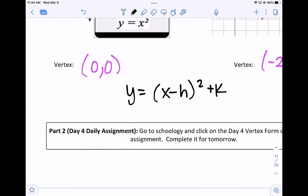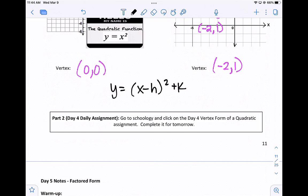So in class, there'll be a link to the day 4 vertex form of a quadratic, which links you to Desmos. You're going to complete it, and it will go through what's the relationship between h and k and the vertex of the graph. And then at the end of class, we'll summarize what you guys found out.